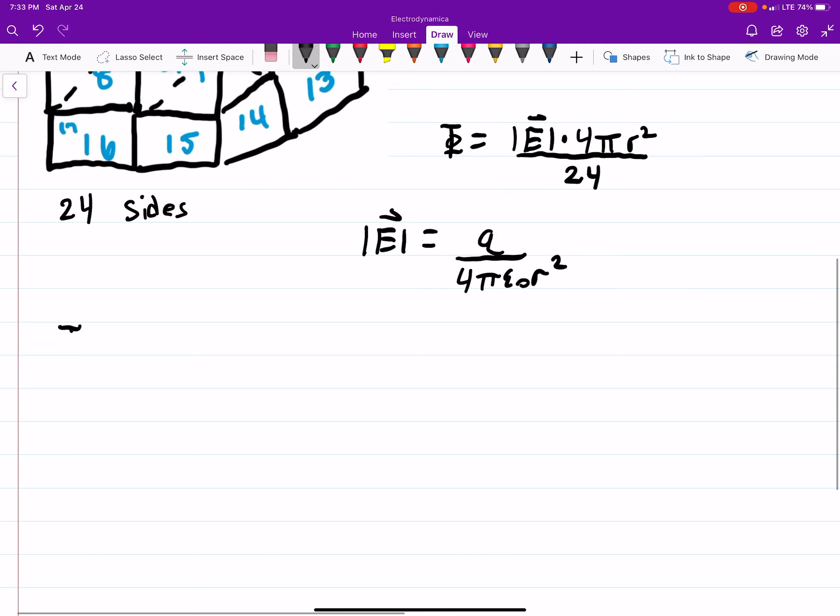So if we plug that into the equation here, you get Q times 4πr² divided by 24 times 4πε₀r². And you can see these will cancel, these will cancel, and you end up getting just your Q, the charge, over 24 times ε₀.